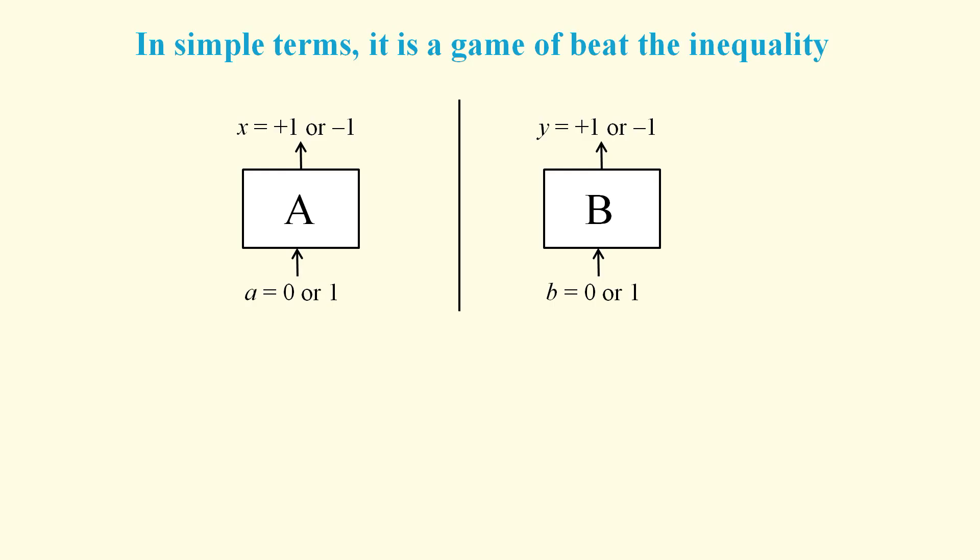In simple terms, the experiment can be represented as two black boxes. At each side we select an input of 0 or 1 at random, and this will result in an output of +1 or -1 at each side.